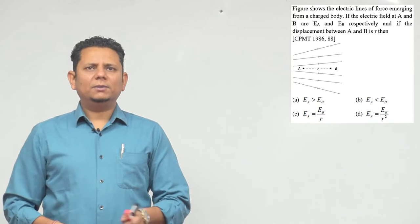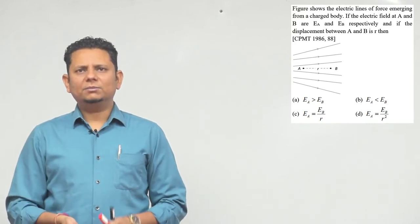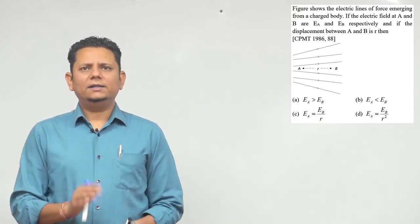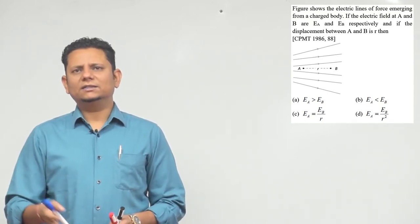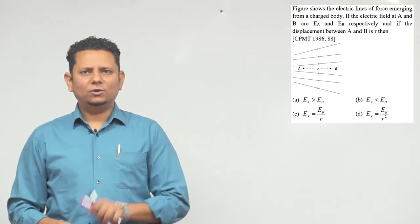...then we compare: EA is greater than EB, or smaller, or EA equals EB by r, or EA equals EB by r squared. Now if you see this dimensionally, you have two options that would be wrong. But to compare EA and EB...